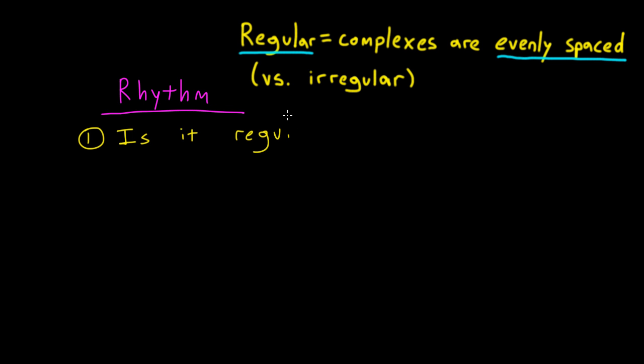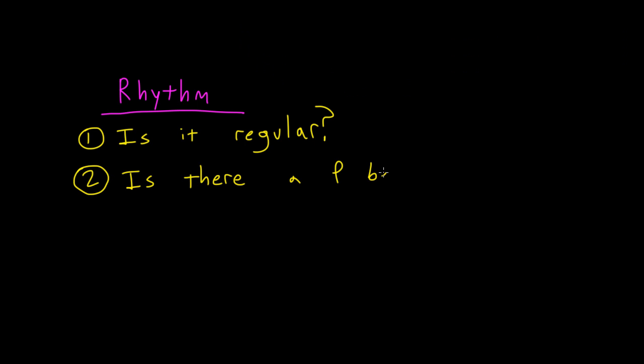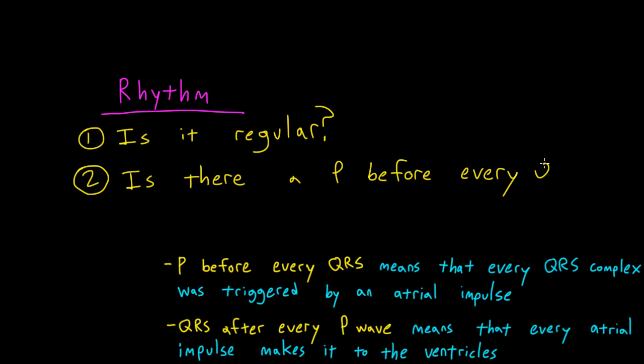So to figure out the cardiac rhythm, I asked myself the following questions. First, is it regular? In other words, are the QRS complexes regularly spaced? Next, I asked myself, is there a P before every QRS and a QRS complex after every P wave?